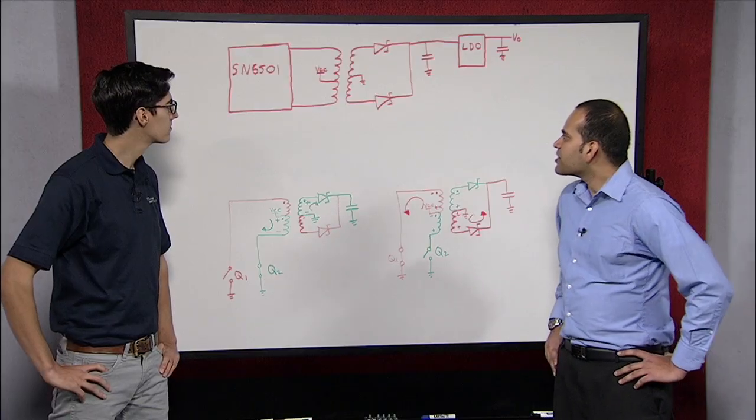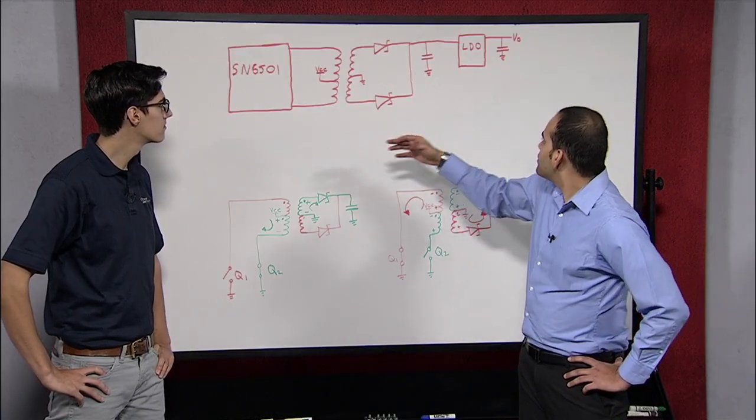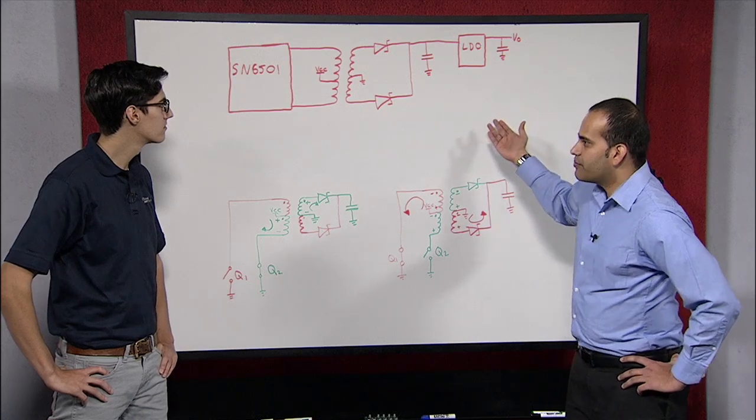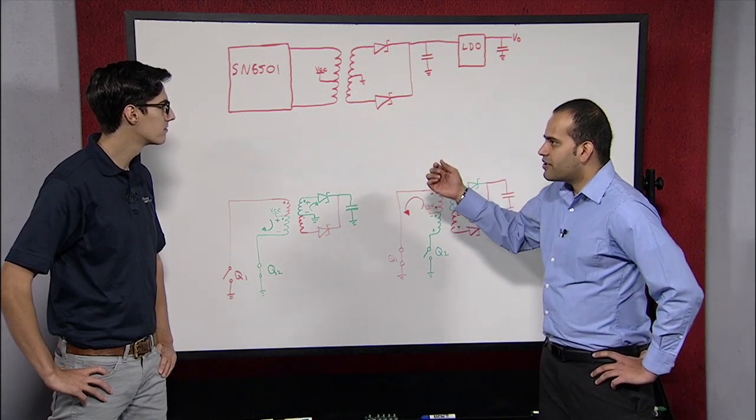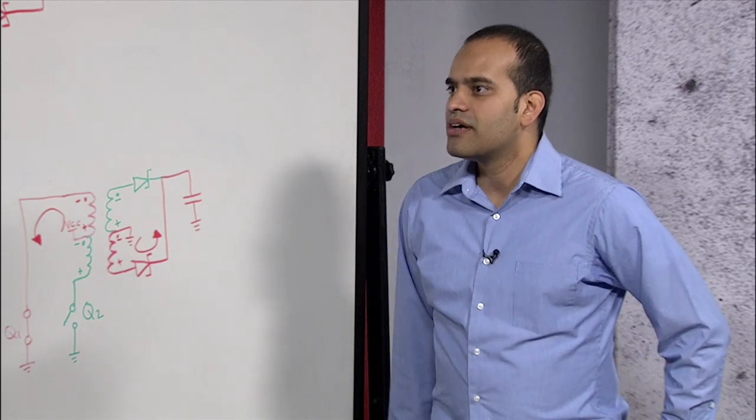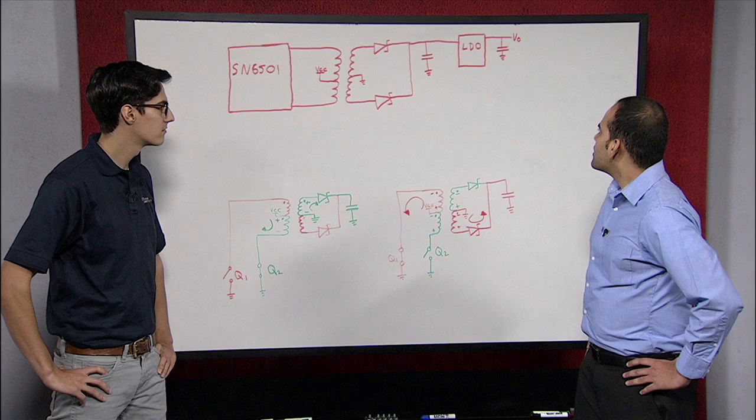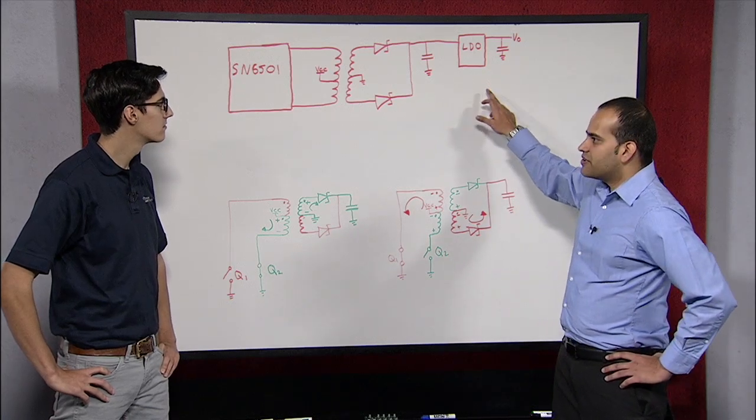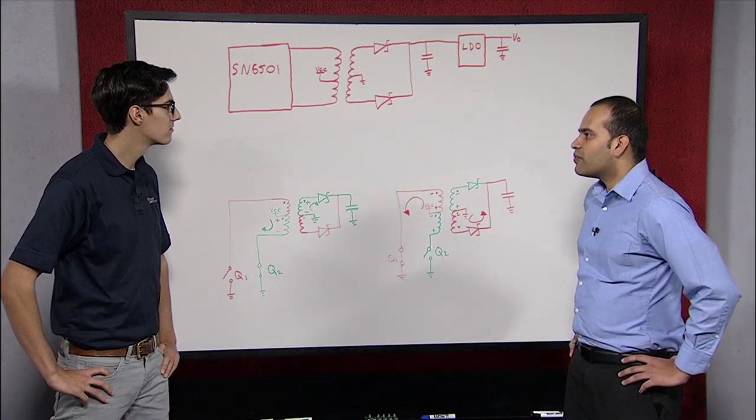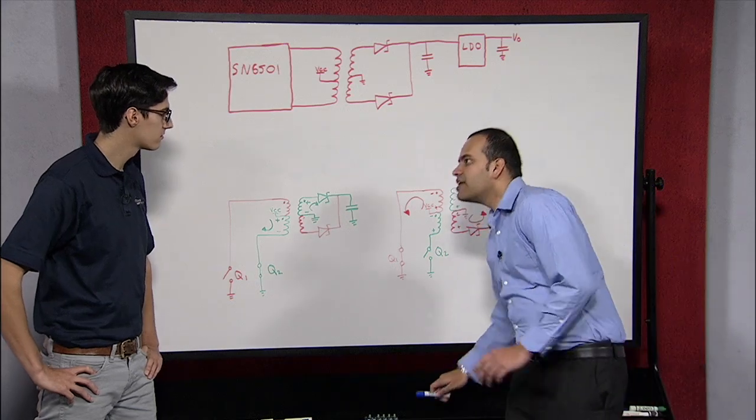Let's assume we are trying to convert 3.3 volts to 5 volts with an LDO. To calculate the turns ratio of the transformer, we need to examine the worst-case input and output voltages. The maximum output voltage of this LDO is 5.175 volts, so let's start with that.